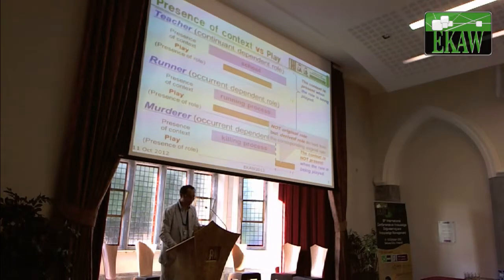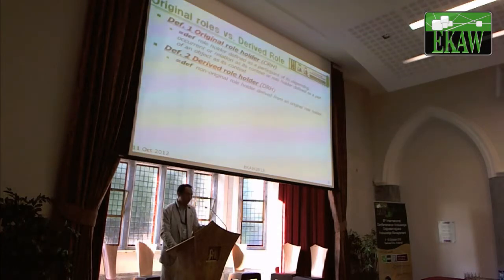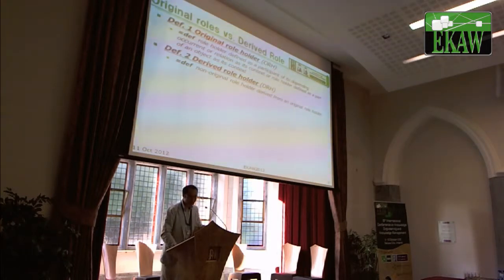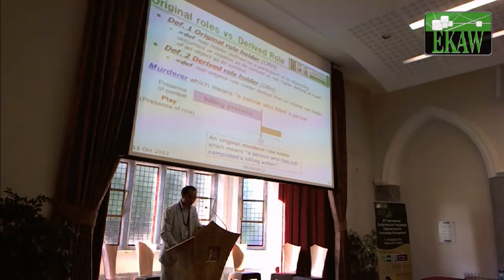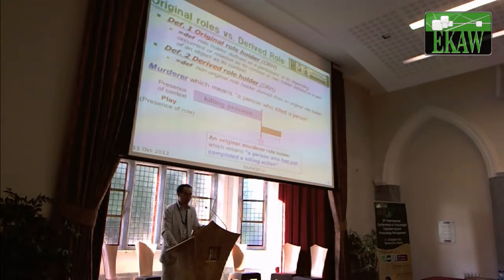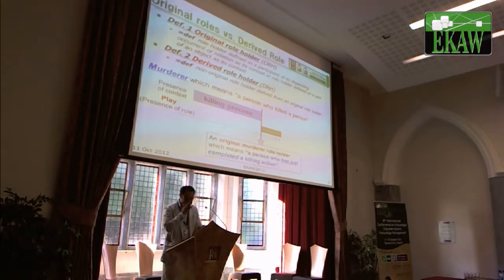Murderer is derived from the corresponding original roles. In the case of murderer, meaning a person who killed a person, we can find the original role of murderer at a specific time point. It is the original role holder, meaning a person who has just completed a killing action. At that time point, the derived role 'murderer' appears.